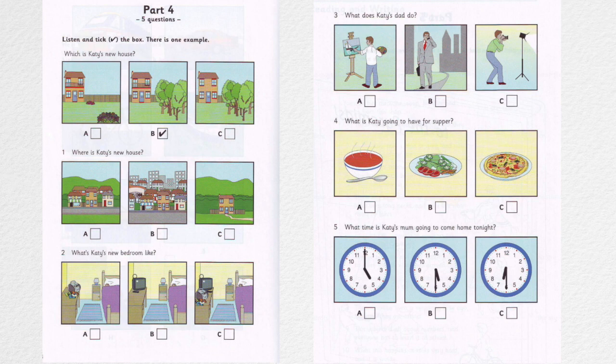3. What does Katie's dad do? My dad works at home now. Is he a businessman? No, he's a photographer. He takes pictures for magazines. Oh, that's an interesting job.